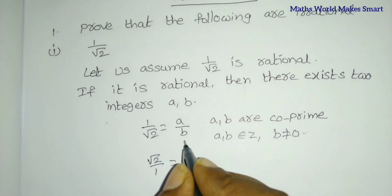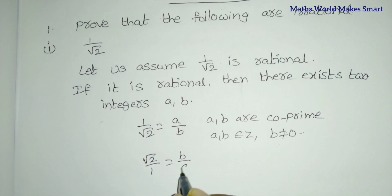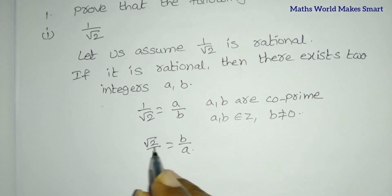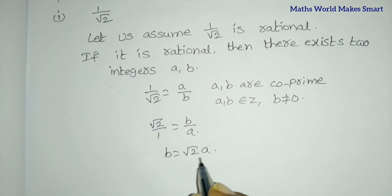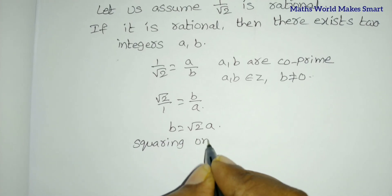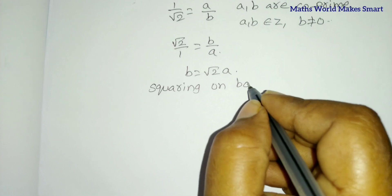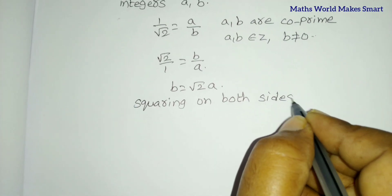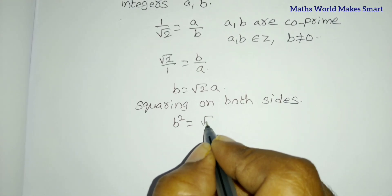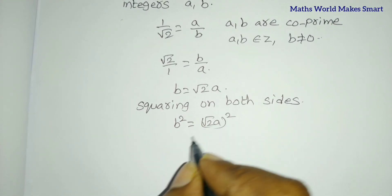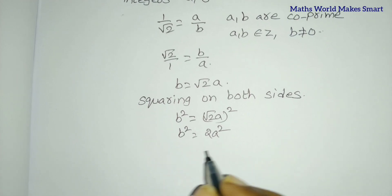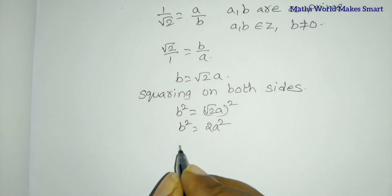By cross multiplication, 1 into B equals root 2 into A, so B equals root 2A. Squaring on both sides, B squared is equal to root 2 squared times A squared, which gives B squared equals 2A squared.